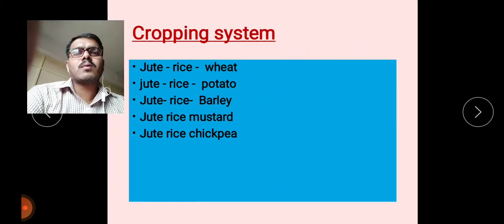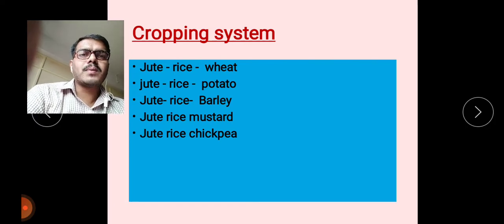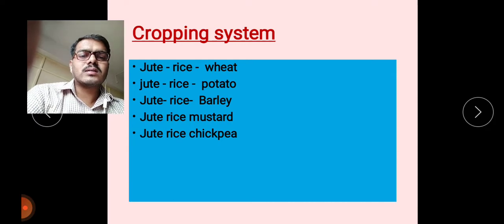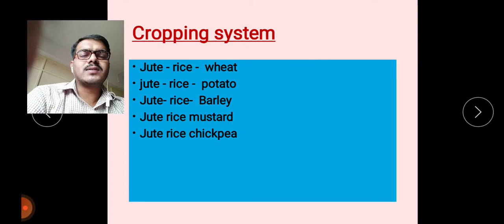Different cropping systems are adopted under jute cultivation. Jute-rice-wheat is the prominent cropping system used in West Bengal and other regions where jute is cultivated. Other important systems include jute-rice-potato, jute-rice-barley, jute-rice-mustard, and jute-rice-chickpea.